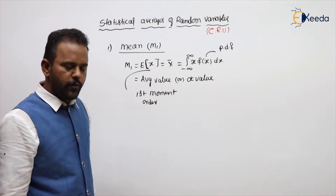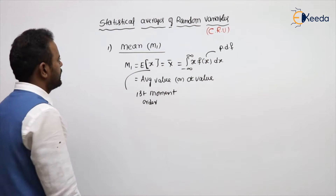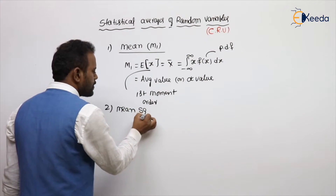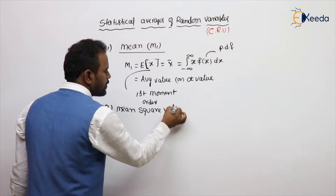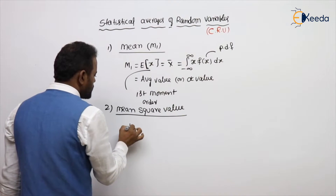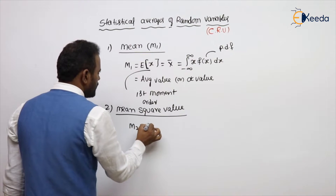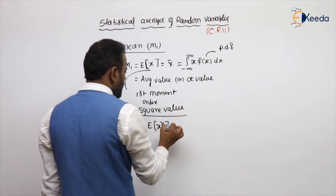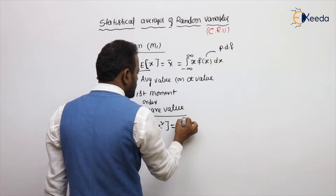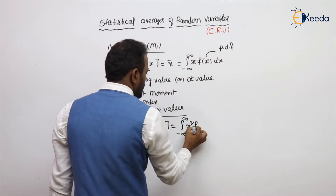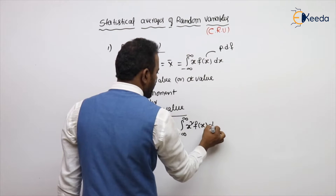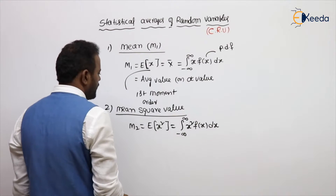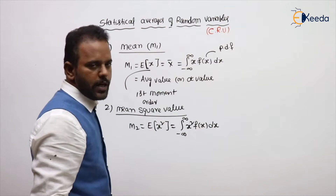The second one is mean square value. Mean square value is denoted with m2, and is nothing but the expected value of x squared. The formula is the integral from minus infinity to plus infinity of x squared times f(x) dx, where f(x) is the probability density function.